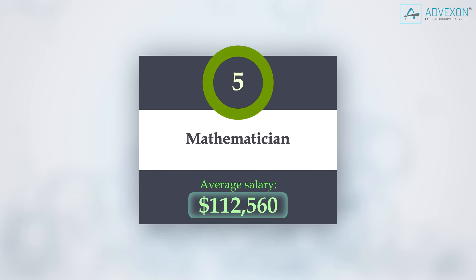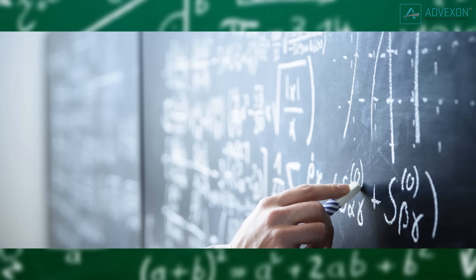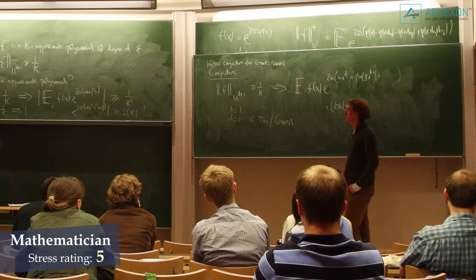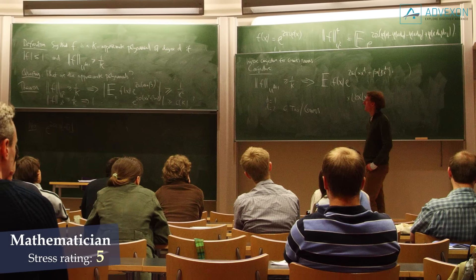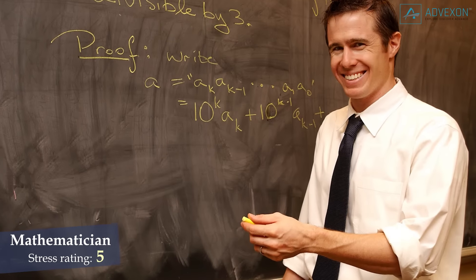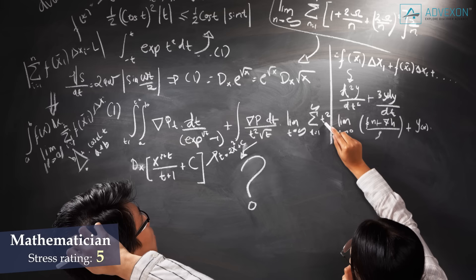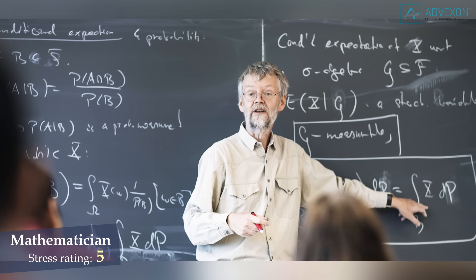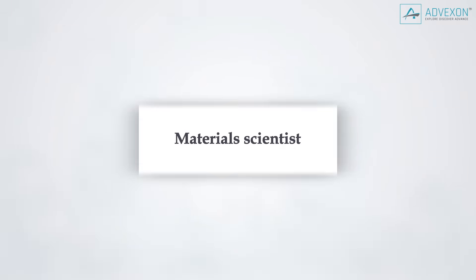Mathematician. Stress rating 5, average salary $112,000. Mathematicians conduct research in fundamental mathematics or in application of mathematical techniques to science, management, and other fields. They also solve problems in various fields using mathematical methods. A bachelor's or master's degree for those who want to work in government and a doctorate may be required to work for private companies.